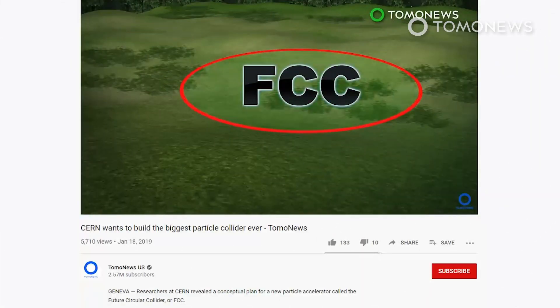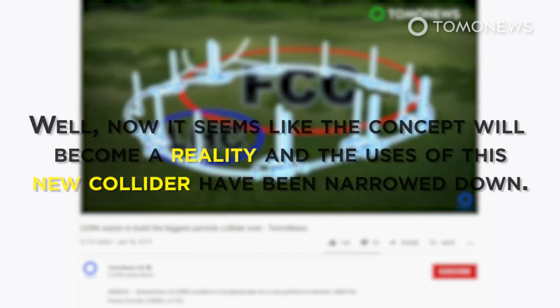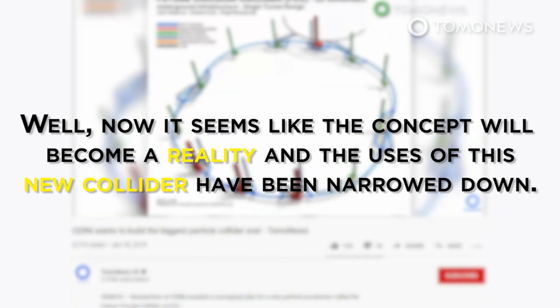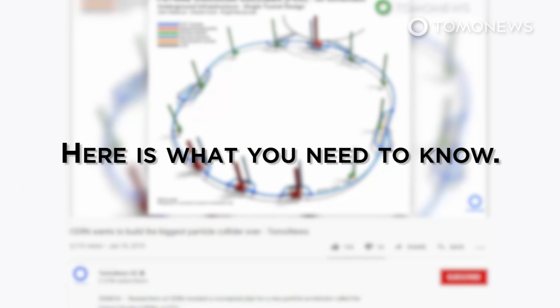Exactly one year ago, we told you that scientists at CERN had released a conceptual plan for an even bigger particle accelerator called the Future Circular Collider or FCC. Well, now it seems like the concept will become a reality and the uses of this new collider have been narrowed down. Here is what you need to know.